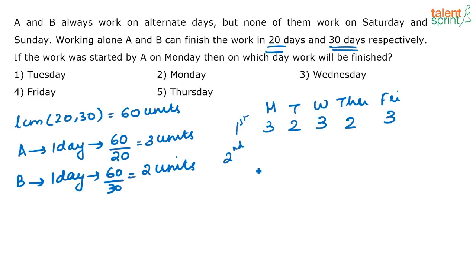When it comes to the second week, who will start the work? Because A completed, B will start. They are working alternately. So here it will be 2, 3, 2, 3, 2. In the first week, the total units of work completed is 3 plus 3 plus 3 is 9, plus 2 plus 2 is 13 units. In the second week, 2 plus 2 plus 2 is 6, plus 3, 9, plus 3, 12 units.